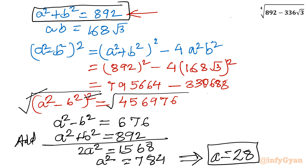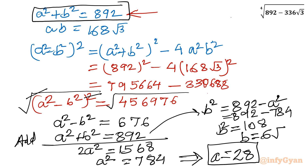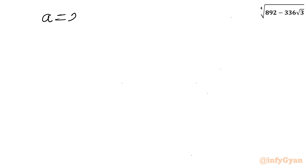Negative value we will exempt. Once a squared is 784, I can find b squared by substituting: b squared equals 892 minus a squared, which is 892 minus 784, giving us 108. So b squared is 108, which is 36 times 3, and therefore b equals 6 root 3. So a equals 28 and b equals 6 root 3.